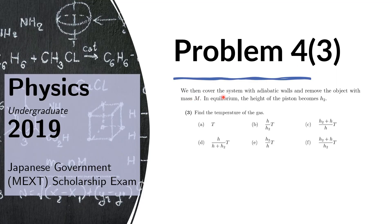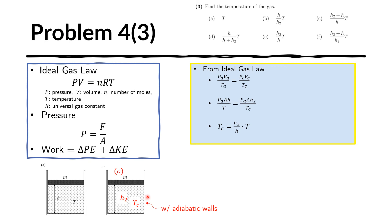For Question 3, we cover the system with adiabatic walls and remove the object with mass M. In equilibrium, the height of the piston becomes H sub 2, and we need to find the temperature of the gas. Because we added adiabatic walls, the temperature of the gas inside does not have to equal the temperature of the air outside. This is different from the previous two questions, where the wall was absent and the temperature inside the gas equaled the temperature outside. For this problem, we use the ideal gas law, where the number of moles and the gas constant R are constant, but pressure, volume, and temperature may all be changing.